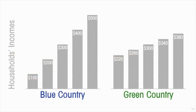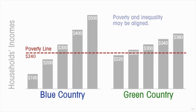So we have our definition of poverty and our definition of inequality, and we can explore the relationship between the two. Here are our two countries again — one more unequal than the other — and let's establish a poverty line of two hundred and forty dollars of income.